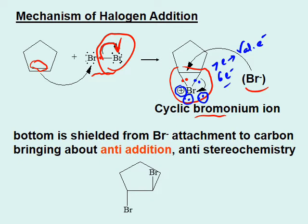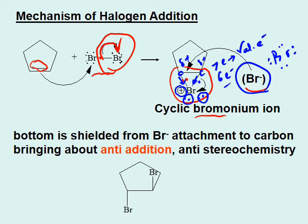Since Br is positive, it attracts electron density away from the carbons, so the carbons develop a delta-plus charge. The Br⁻ that separated has eight electrons and gets attracted to these positively charged carbons in the triangular ring. However, it cannot approach from the same side as the bromonium Br, because that bromine is blocking the passage — like a big sumo wrestler blocking a door. So you try to use the other door where there is no blockage.